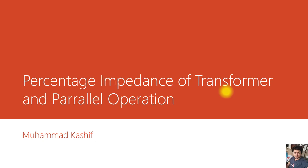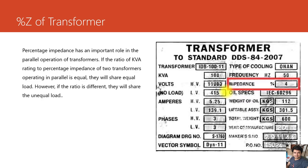Welcome friends. Today we will discuss and learn about the percentage impedance of a transformer and its role in the parallel operation of transformers. What is the percentage impedance? If you see the nameplate of a transformer, you can see — besides other parameters — the percentage impedance. You can see the percentage impedance of this transformer is 4%, which is typical for a distribution transformer.